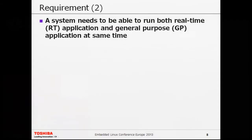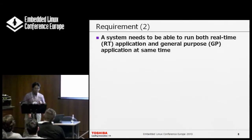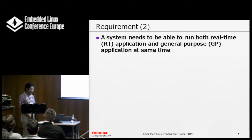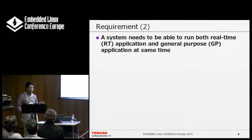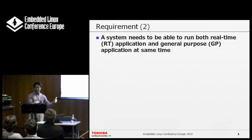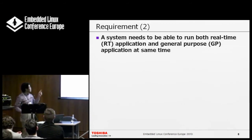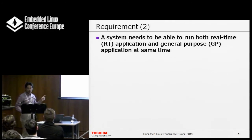Requirement two is: a system needs to be able to run both real-time applications and general-purpose applications on the same hardware. This is a new requirement for us. With multi-core CPUs, someone might think: now we have two cores, I would like to use one core for real-time systems and the other for general purpose. But to do so is really, really difficult — I will explain it later.